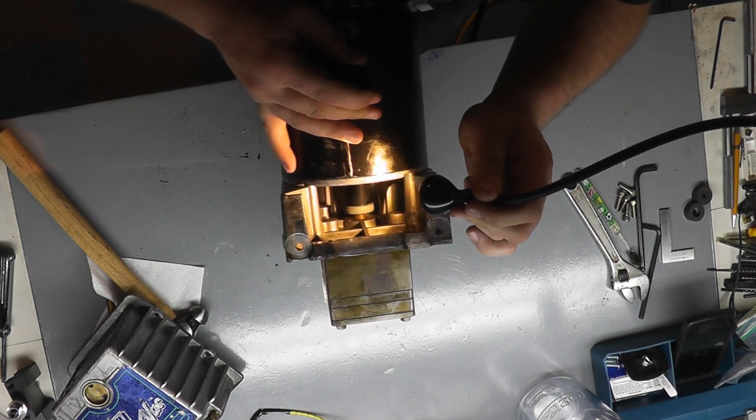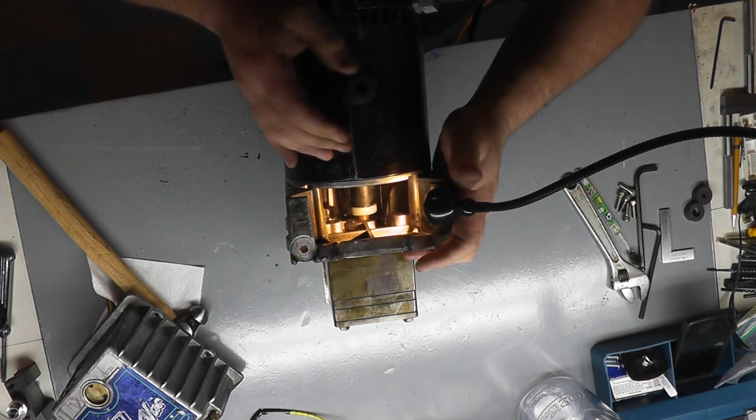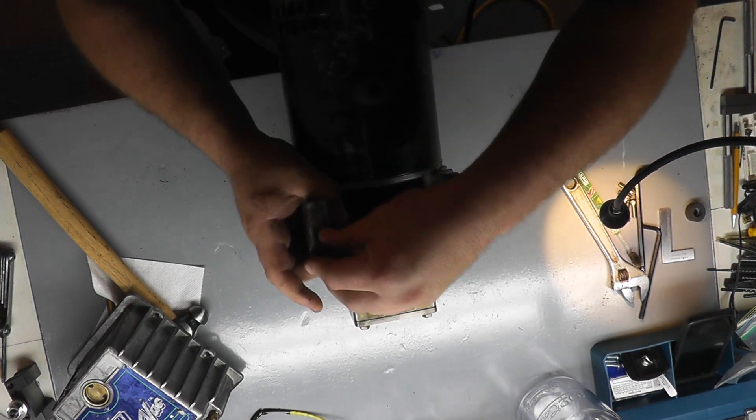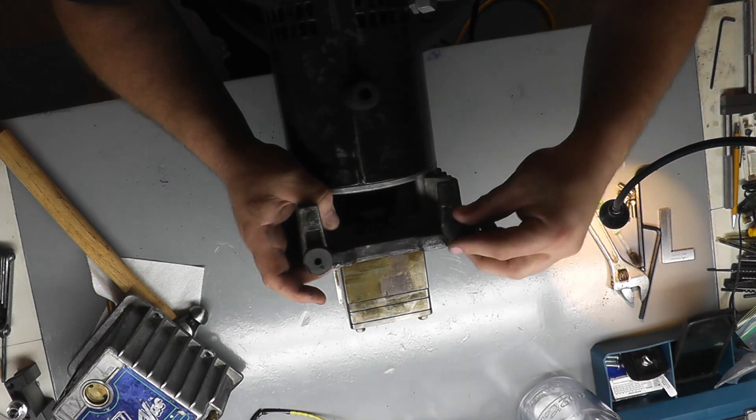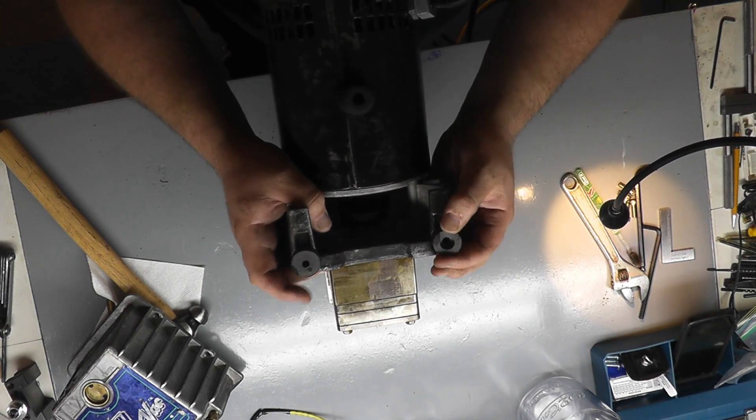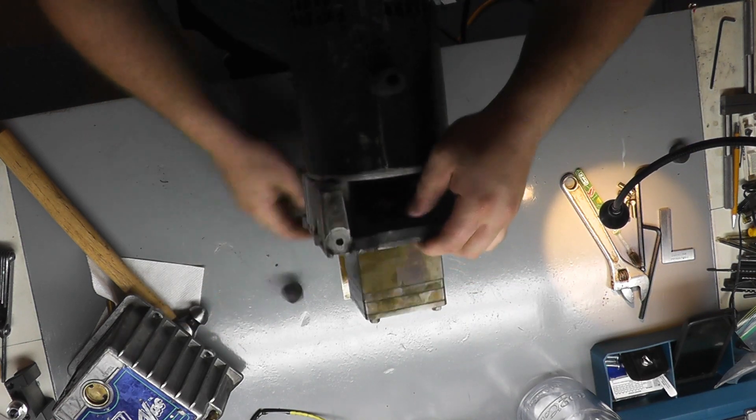So basically we have two feet that are supposed to sit right here, which I have. So they'll sit right into these little cutouts like so upside down. So we'll bolt those in place.